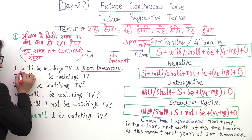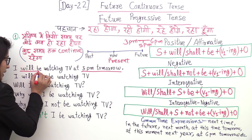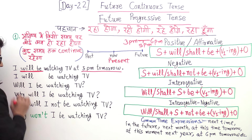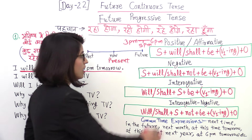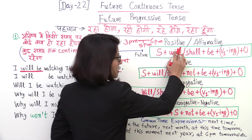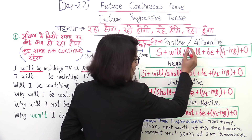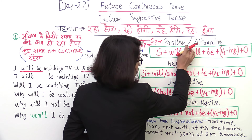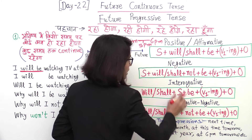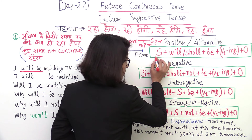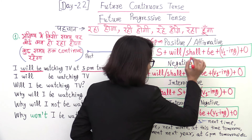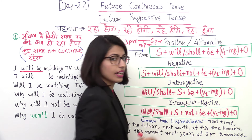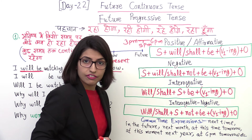So in English I would say: I will be watching TV at 5 pm tomorrow. Here '5 pm tomorrow' gives the time reference, and 'will be' is the helping verb used. Now let's look at the structure of sentences.